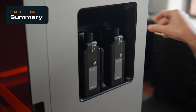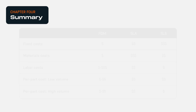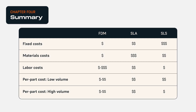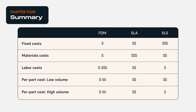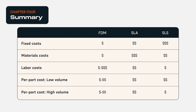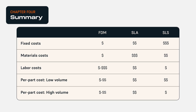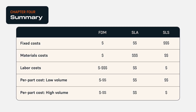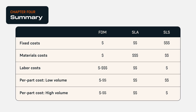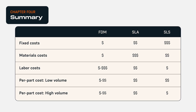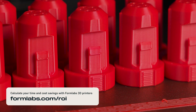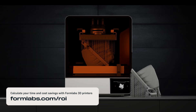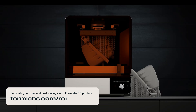To sum it up, FDM has the lowest barrier to entry when it comes to both the cost for the printer itself and cost per part. SLA offers premium part quality at a slight premium cost. SLS is the most cost-effective process for producing medium to large volumes of high-quality functional parts, but the upfront cost is much higher than with FDM or SLA. Cost will differ between manufacturers and models depending on your application, so make sure to ask about printer, material, and labor costs before making a purchase.